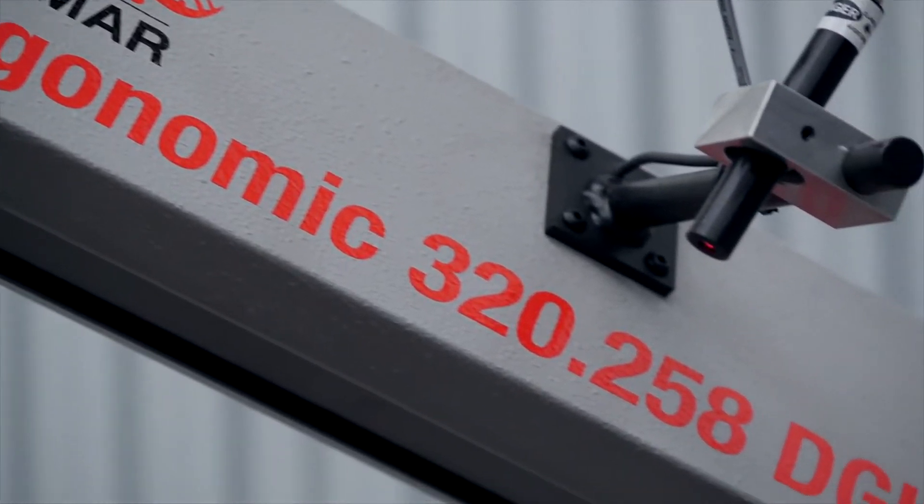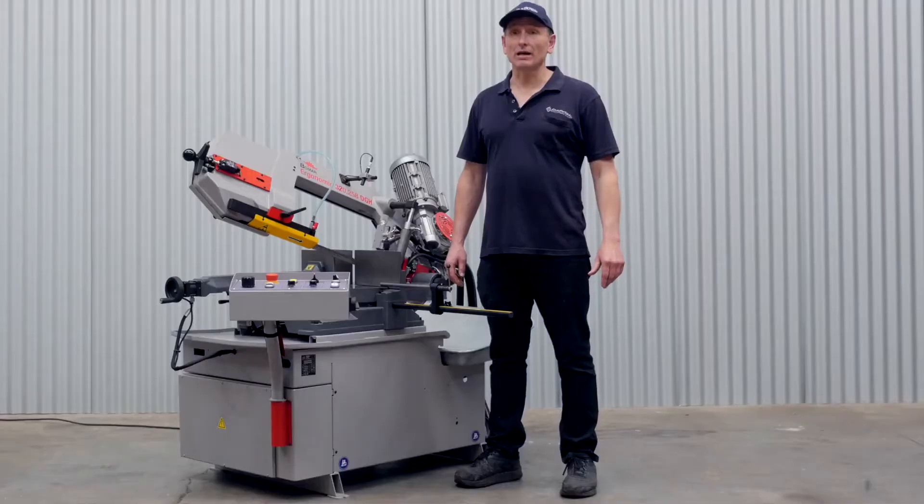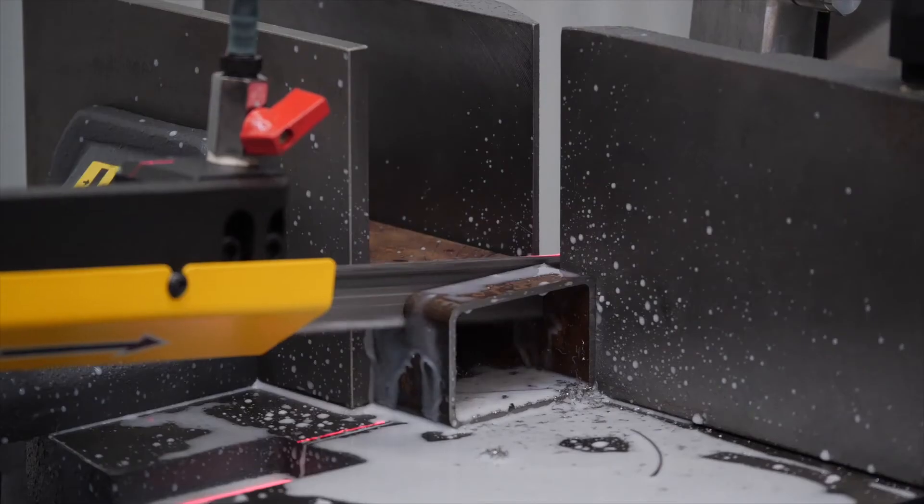Hi, Cameron here from Capital Machinery with the BOMAR 320-258 DGH Semi-Automatic Bandsaw. This machine is ideal for processing smaller to medium sized material.